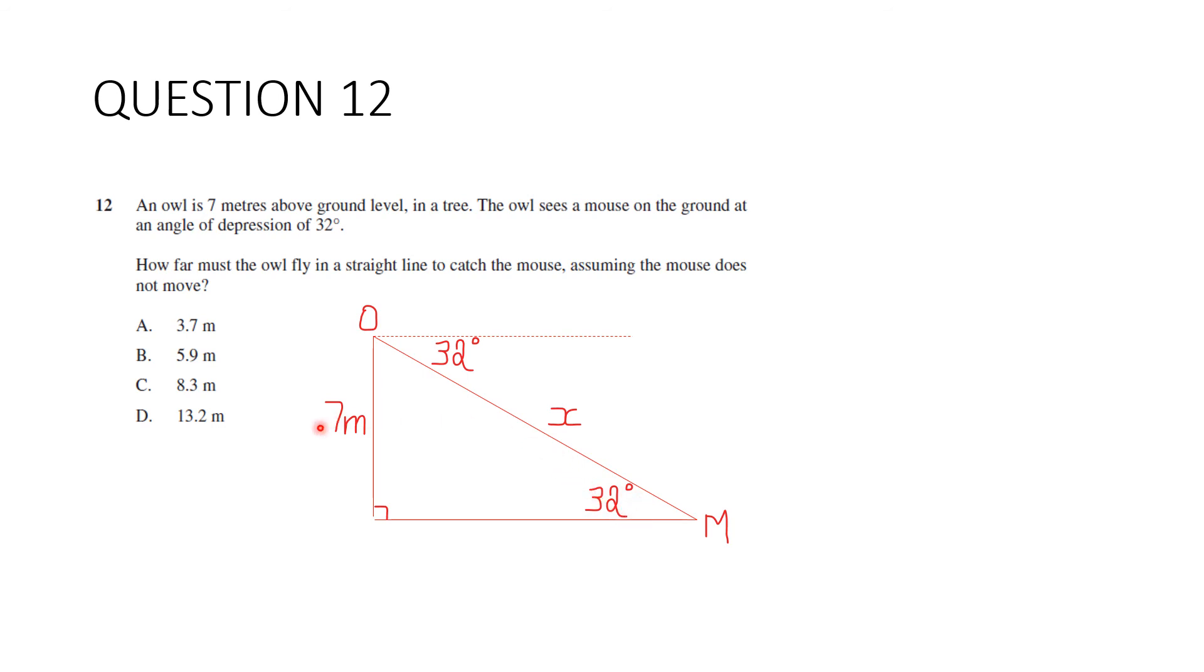We're going to do some basic trig. So what have we got? Opposite and hypotenuse. So it's going to be sine. Sine 32 is seven on X. So make sure you get that order correct. Opposite over hypotenuse. Do you remember what to do here? We switch these. The X comes up here. Sine 32 goes down the bottom. And then in the calculator gives us 13.2 metres, which is D.